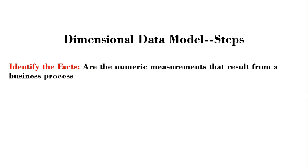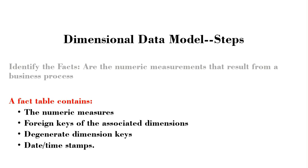Next, you need to identify the numeric measurements you are going to measure from the business process — these are known as the facts. In a dimensional model, you do not mix the numeric measurements with the descriptive attributes. You need to differentiate them: the numeric measurements you call facts, and the descriptive entities you call dimensions. We then create a fact table, which should contain our facts — the numerical measurements — and the foreign keys of the associated dimensions, in order to link all the dimensions and obtain a star schema.